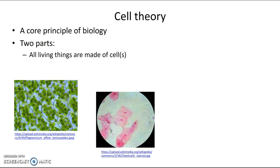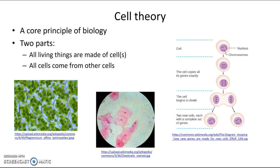The second part of cell theory is that all cells come from other cells. They do this through a process of cell division, where one cell copies all of its important material and then divides itself into two cells with that material. So that's cell theory.